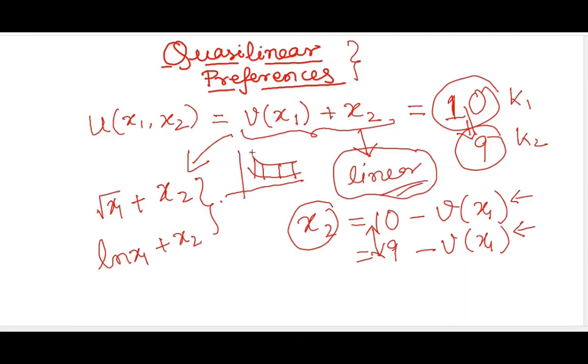So the difference between two ICs, two indifference curves which are representing utility functions or underlying preferences, will be essentially k1 minus k2, or 10 minus 9 if those are your k1 and k2.